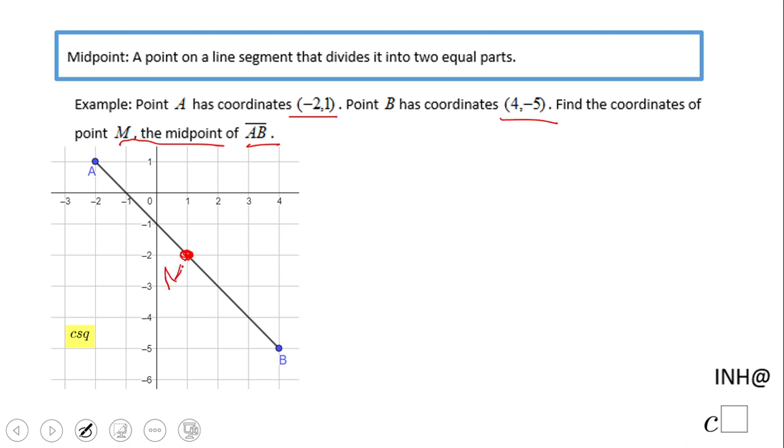There is an algebraic way to do it because you have a formula. You notice here x sub m is the x-coordinate of the midpoint. It's nothing else than the average or the arithmetic mean of the x-coordinates of the given points.